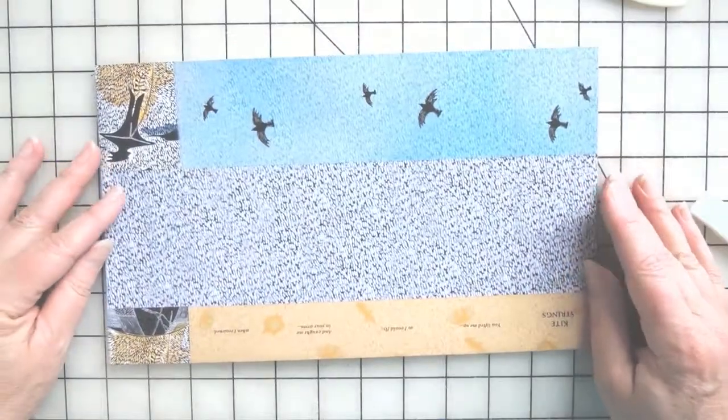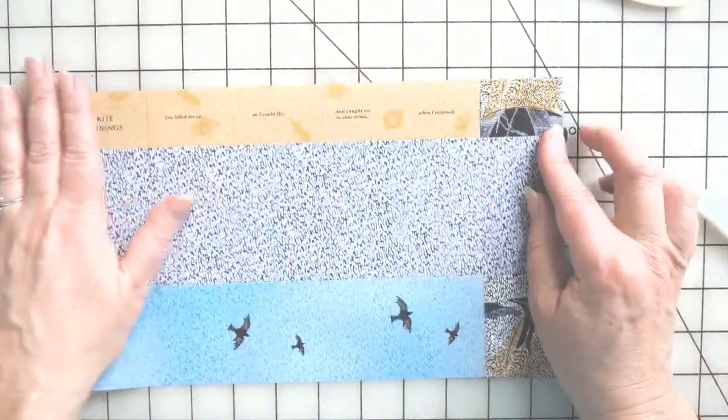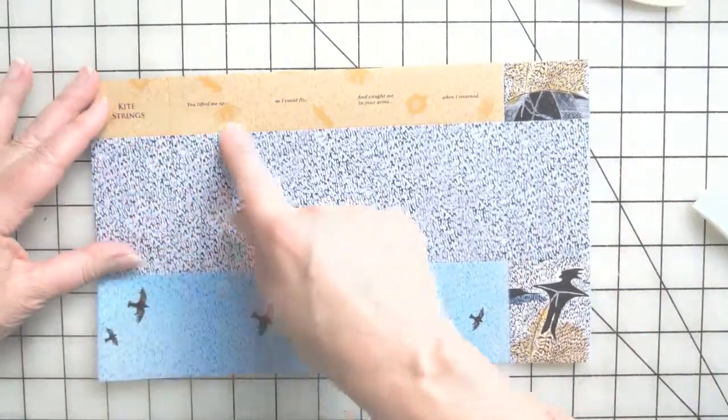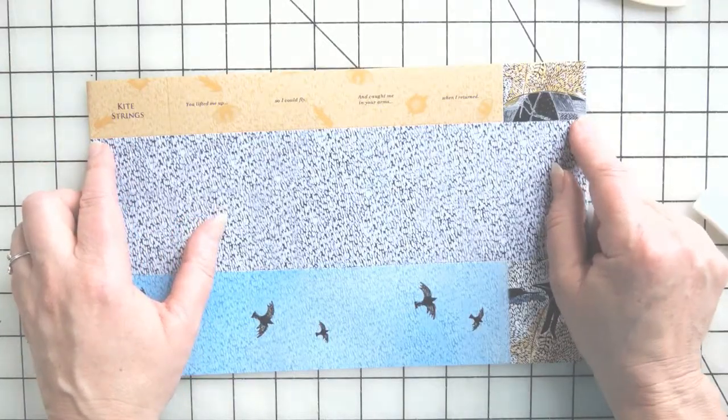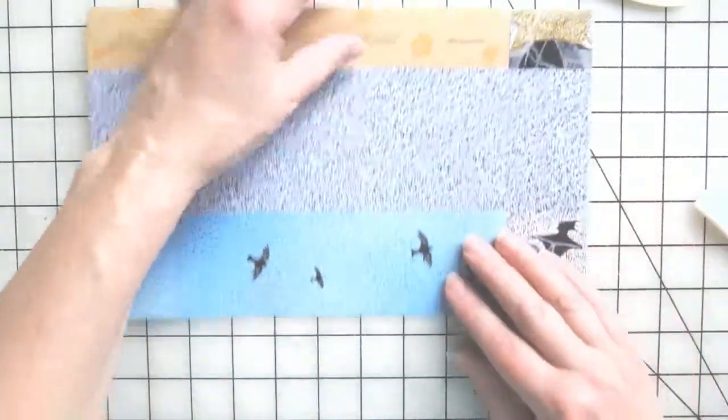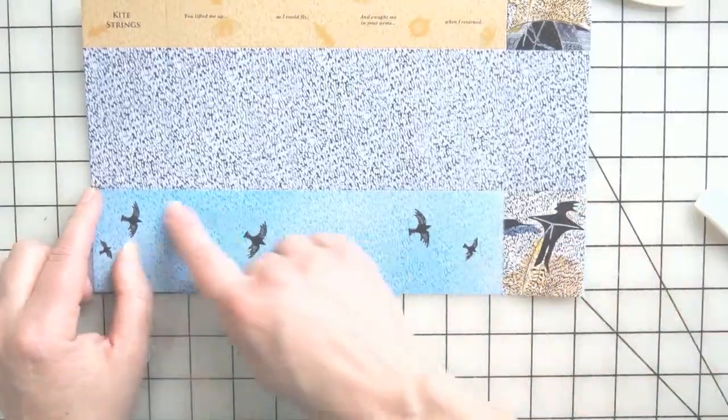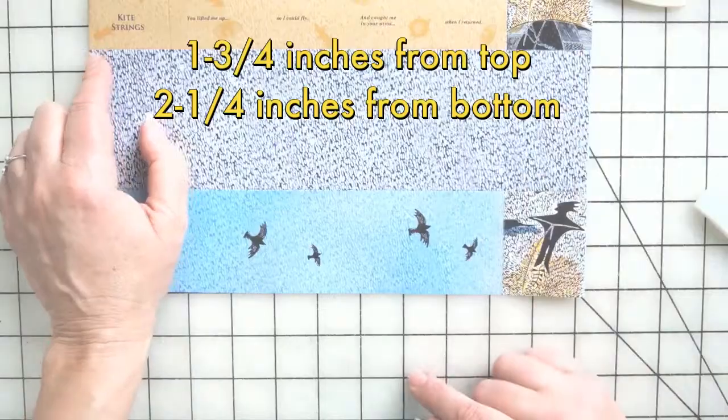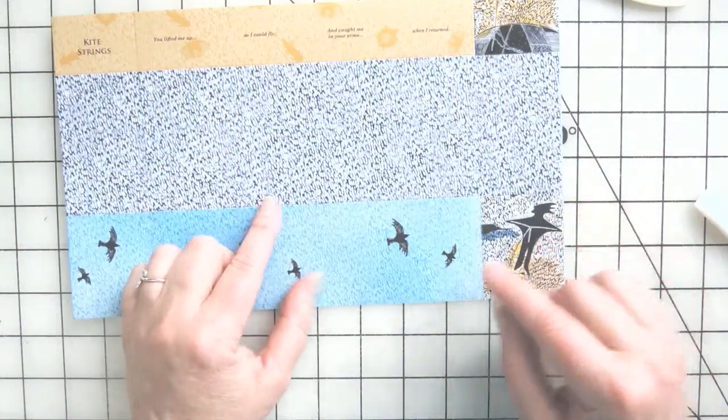Now before we fold the accordion, we're going to want to score those folds as well. We're going to create the pockets by scoring a fold at one and three-fourth inch down, so score that line there, as well as another line here at two and a fourth inches from the bottom. So you'll have those two lines scored in for the pockets.